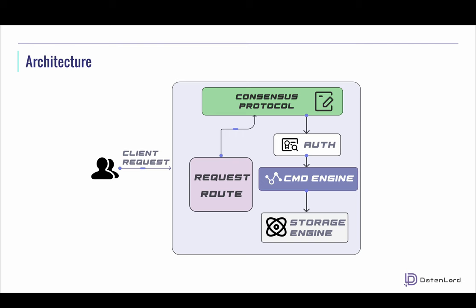In X-Line, when the client sends a request to the server, it routes the request to the consensus protocol. Once the protocol completes message syncing, the server will try to apply the command by checking auth first, and then applying the storage-level change. This architecture is used for ETCD compatibility. If we want to achieve better performance, we need to move part of the consensus protocol to the client side — we will show that later. The main innovation of X-Line is that consensus protocol, called CURP.